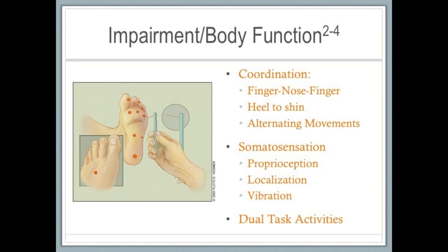The cerebellum can be affected in individuals with MS, so coordination tests such as finger-nose-finger, heel-to-shin, and alternating movements help identify tremor, ataxia, dysmetria, and dysdiadochokinesis. Sensory testing to identify proprioception, localization, and vibration impairments assists in understanding limitations to balance. Individuals with MS might have impaired vibration before other sensory problems are noticed. Dual-task abilities are often more challenging for people with MS, and dual-task walking should be assessed in patients who can perform walking tests in the clinic but complain of falls and poor balance at home.